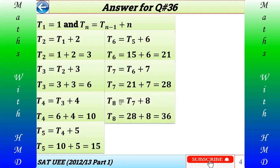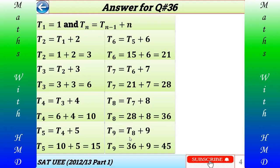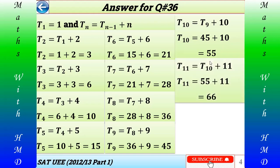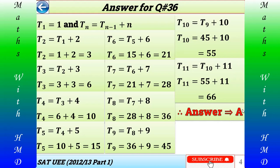T(8) = T(7) + 8 = 28 + 8 = 36. T(9) = T(8) + 9 = 36 + 9 = 45. T(10) = T(9) + 10 = 45 + 10 = 55. T(11) = T(10) + 11 = 55 + 11 = 66. So the 11th term of the sequence is 66, and hence the answer is A. Thank you very much.